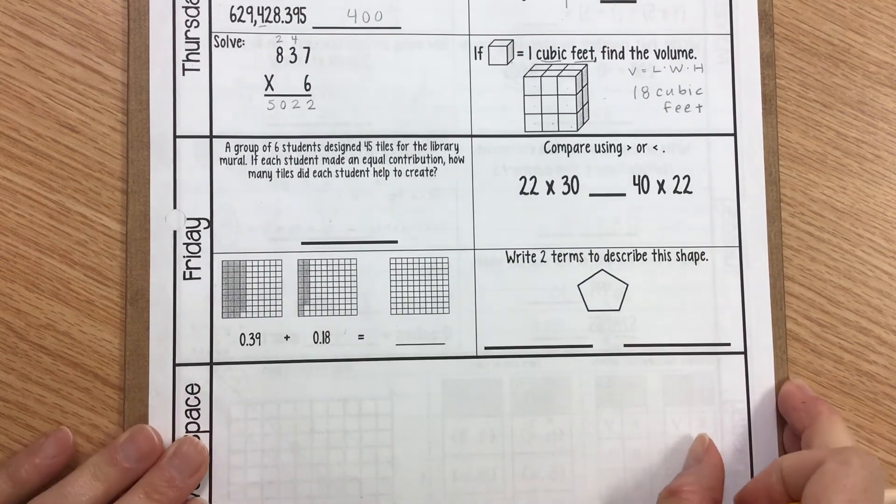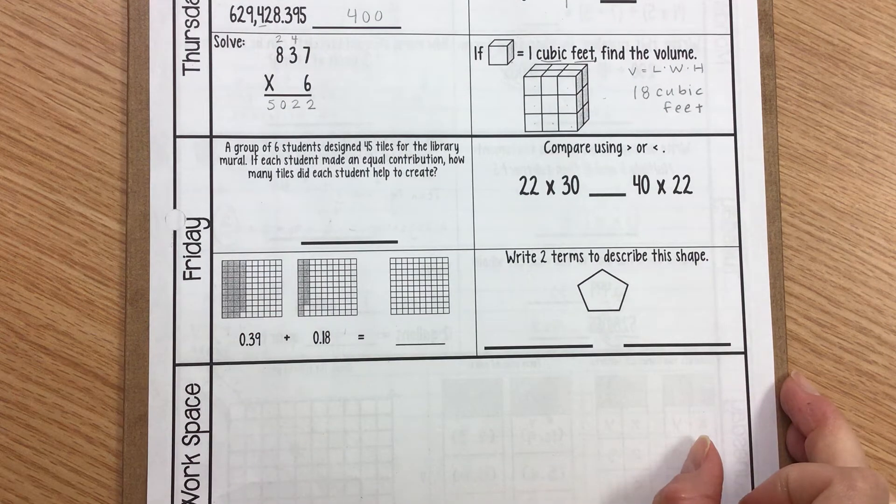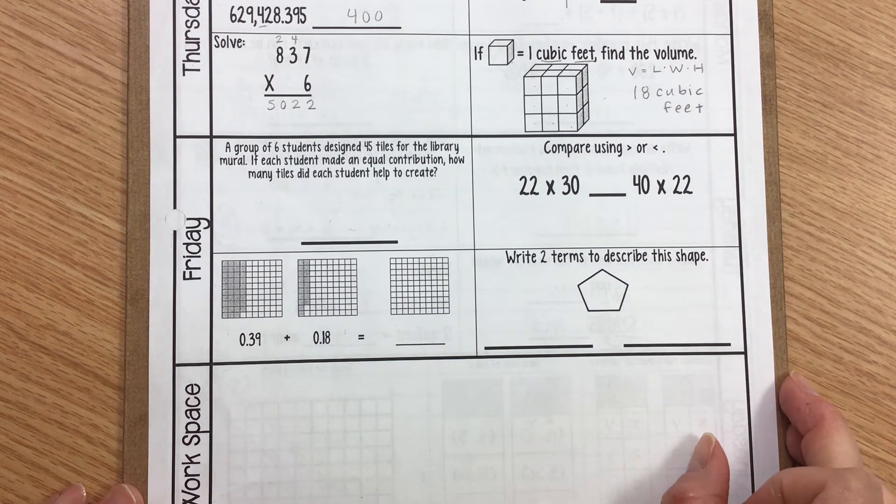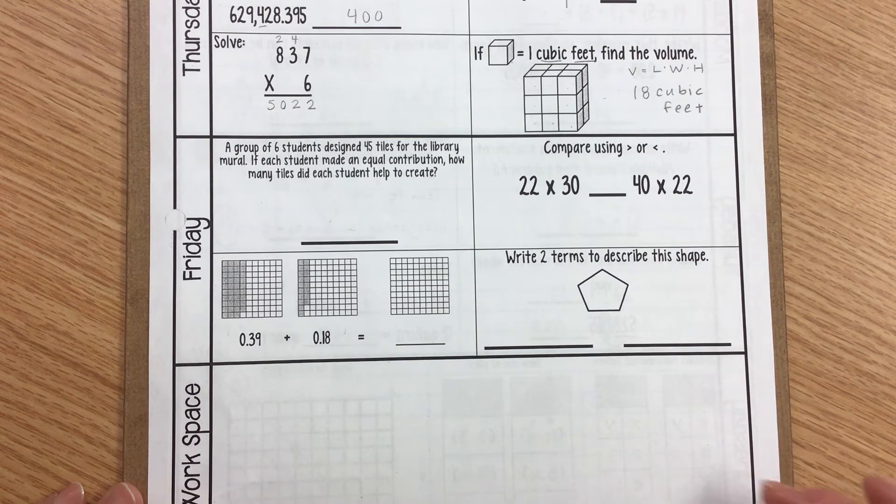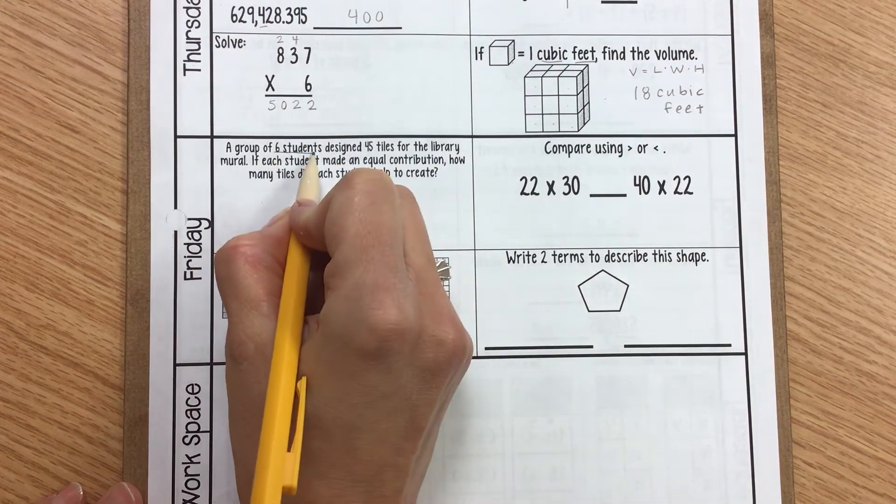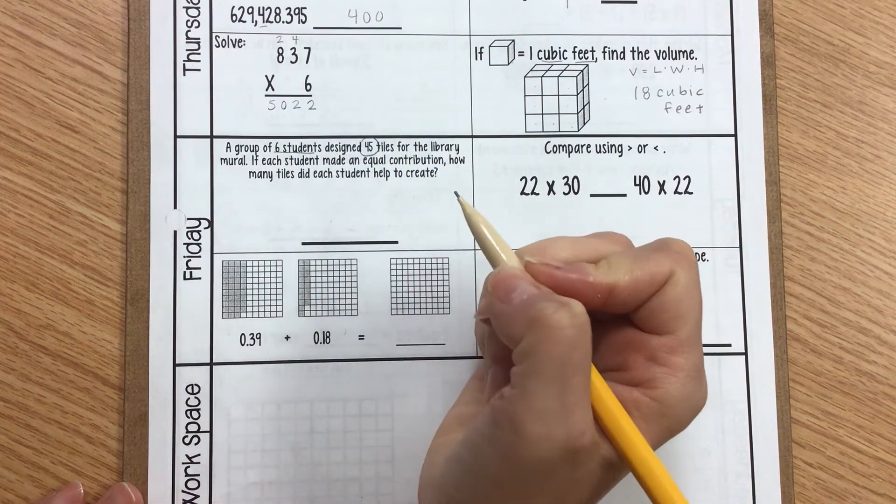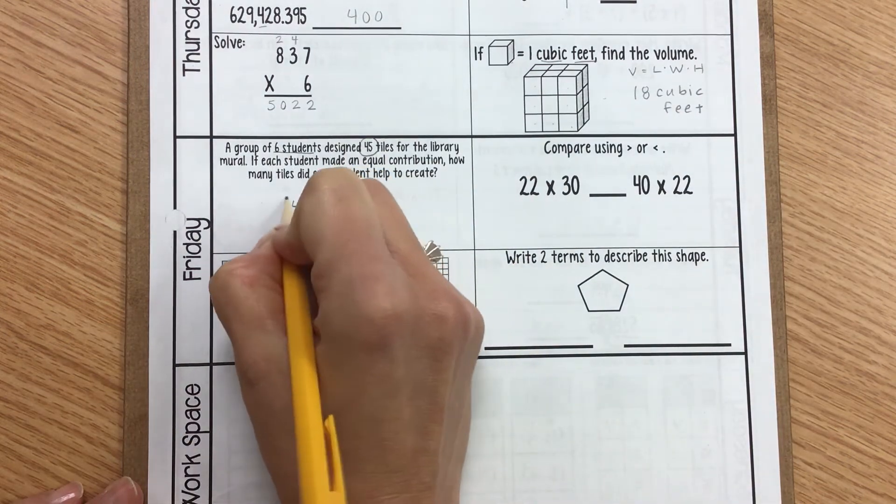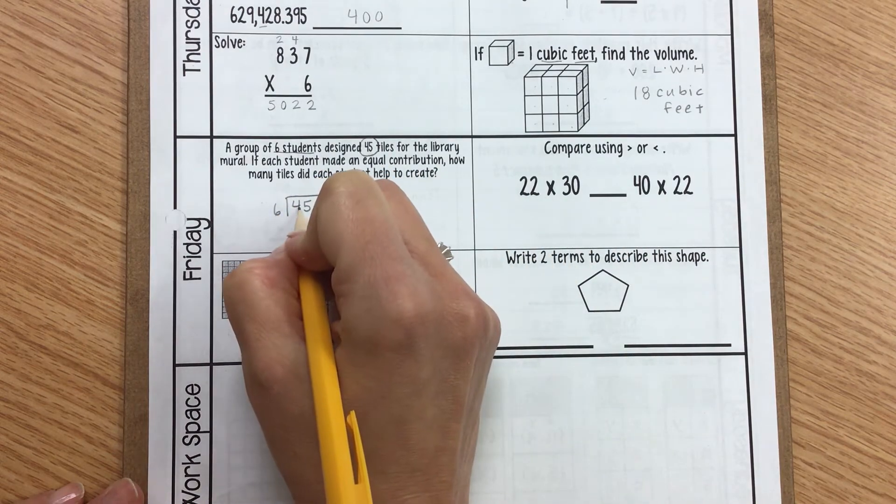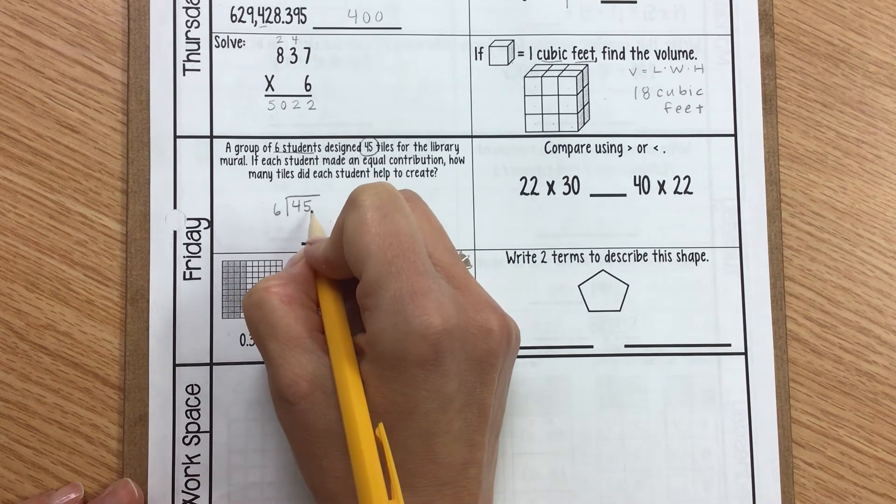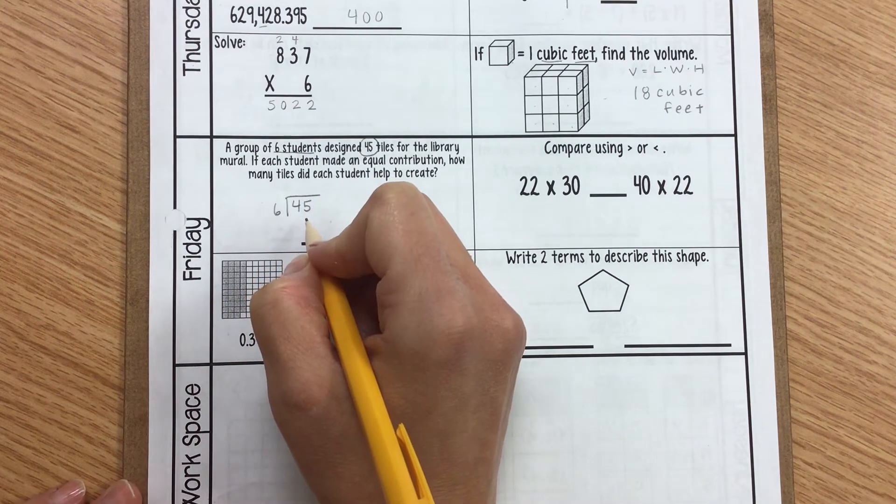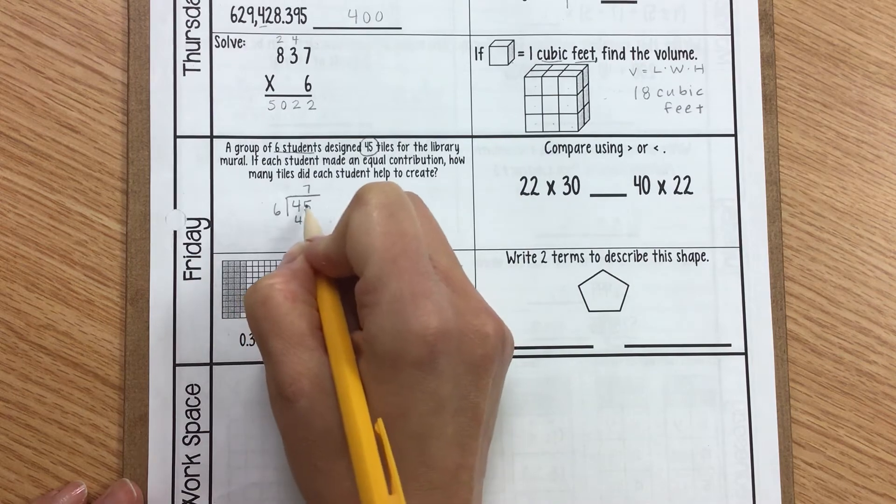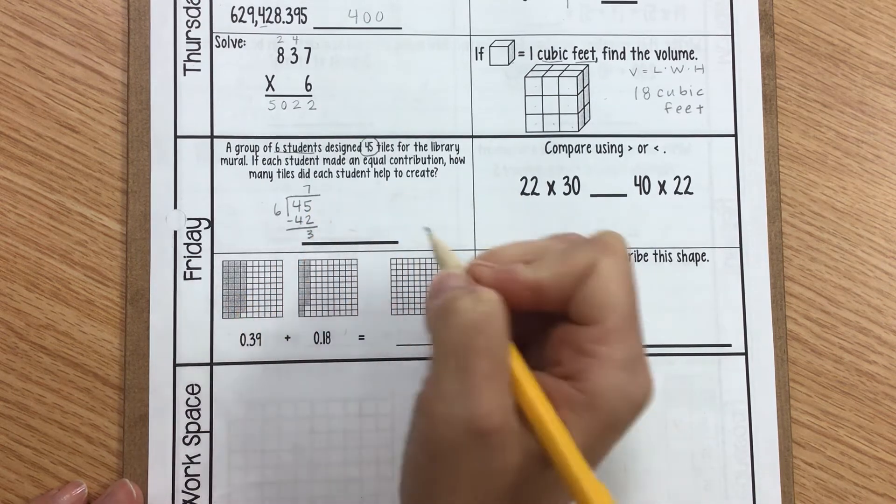So for Friday, a group of 6 students designed 45 tiles for the library mural. If each student made an equal contribution, how many tiles did each student help to create? So this is actually a division problem because you have these 6 students designed a total of 45 tiles combined. So we're going to take 45, divide it by 6. So 6 can't go into 4. So we have to look at how many times can it go into 45? So if I know my multiplication facts, 6 times 7 gives me 42. That's going to be the closest thing to 45. I'm going to subtract and I get 3 left over.